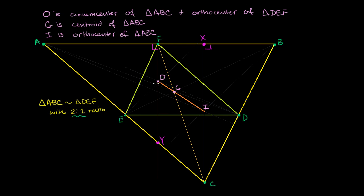We actually used this fact when we proved that orthocenters exist — we started with the medial triangle and noted that its altitudes are perpendicular bisectors of the larger triangle. So point O is both the circumcenter of triangle ABC and the orthocenter of DEF. Now, in order to prove that O, G, and I all sit on the same line, I'm going to prove that triangle FOG is similar to triangle CIG.